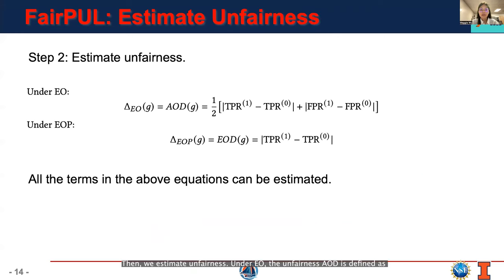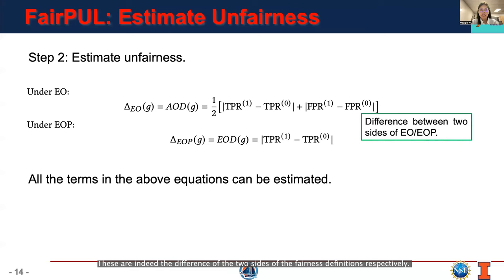Then we estimate unfairness. Under EO, the unfairness Δ_EO(g) is defined as the average of the absolute difference of true positive rates and false positive rates between two groups. Under EOP, the unfairness Δ_EOP is defined as the absolute difference between the true positive rates. These are indeed the difference of the two sides of the fairness definitions respectively. All the terms in the above equations can be estimated.